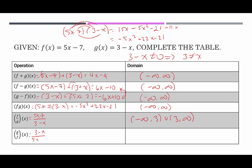The other quotient function, g over f, is (3 − x)/(5x − 7). We can't simplify because there are no common factors. This time 5x − 7 cannot equal zero, so 5x ≠ 7, meaning x ≠ 7/5. We can plug in anything including 3, but not 7/5, so the domain is (−∞, 7/5) ∪ (7/5, ∞).